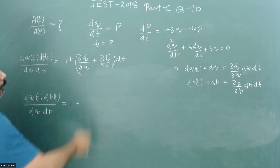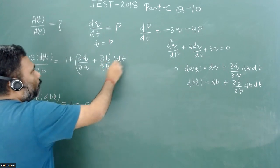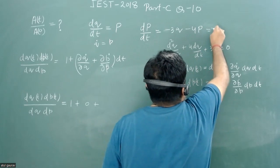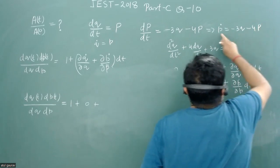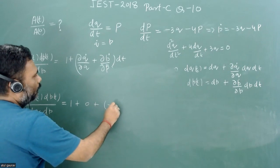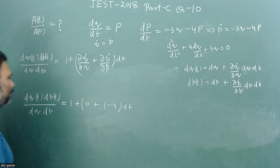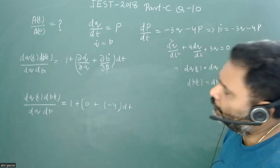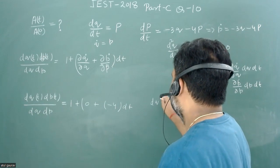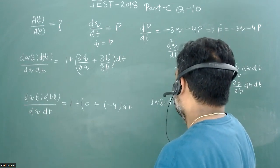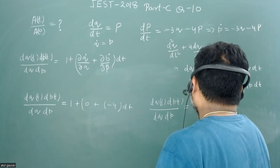For the second term: ṗ = -3q - 4p, so ∂ṗ/∂p = -4. Therefore, the infinitesimal phase volume ratio becomes: dq(t)·dp(t) / (dq·dp) = 1 - 4·dt.